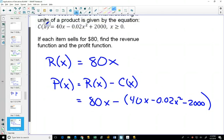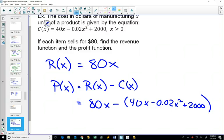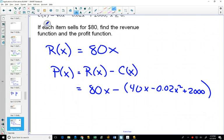And if I wanted to write this in explicit notation, it's 80x minus (40x - 0.02x² + 2000). If I combine like terms and distribute things here, I would get 40x + 0.02x² - 2000.